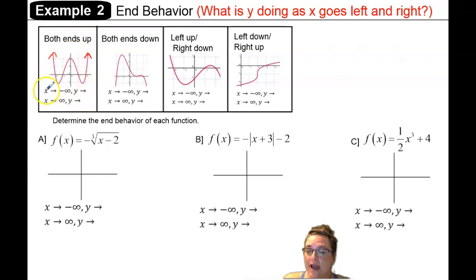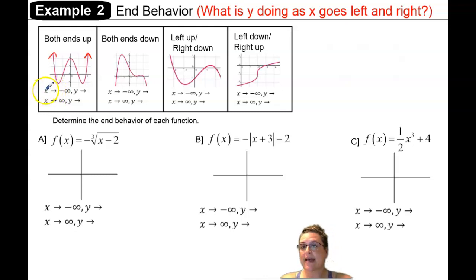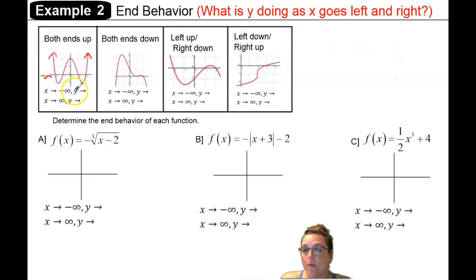So this notation for end behavior — that arrow is the word 'approaches.' As x approaches negative infinity, that means I'm looking at the left end, because negative infinity in the x direction is on the left. The y is approaching positive infinity, since that end on the left is headed up to positive infinity.